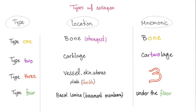Let's review the different types of collagen. Type 1 is found in bone. Type 2 in cartilage. Type 3 in vessel, skin, uterus — type 3 is very pliable or flexible. Type 4 is in the basal lamina or basement membrane.